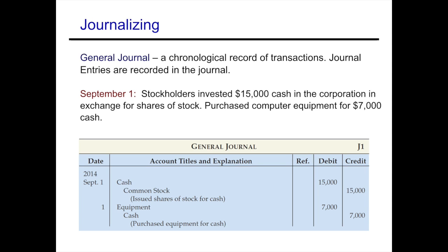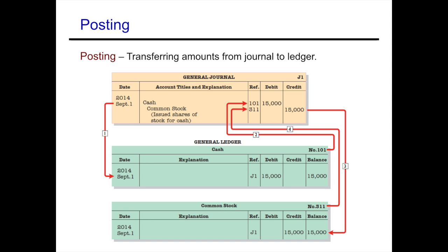The second transaction: we purchased computer equipment for $7,000 in cash. Equipment, which is an asset, is increasing, so we debit equipment for $7,000 and we credit cash, which we are paying out. Cash is an asset going down, so we credit cash. Once you've journalized a transaction, you then post that transaction to the ledger.